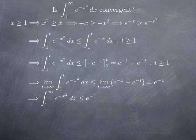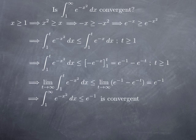So we have our improper integral bounded above by e to the negative 1. Since e to the negative x squared is a positive function, the only way this improper integral could be divergent is if it goes to infinity. But since it is bounded above by a finite number, it doesn't go to infinity and therefore is convergent. To reach this conclusion, we had to compare with another function for which we could do explicit calculations.